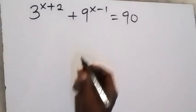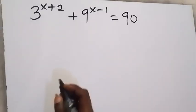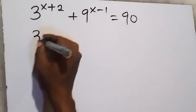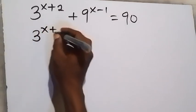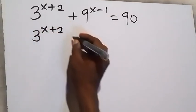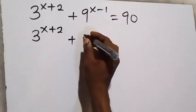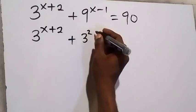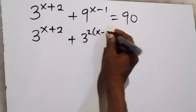From here, let's change everything to have the same base of 3. This will be 3 raised to power x plus 2, plus — here we rewrite 9 as 3 raised to power 2, then multiply by x minus 1.